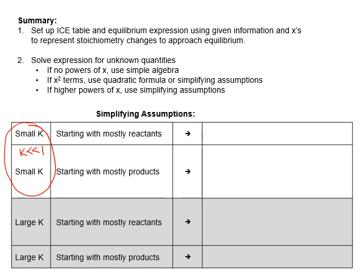If your k is small and you start with mostly reactants, then your starting position is close to your equilibrium position, so the changes you're going to make should be small. We can usually assume that x is going to be small.